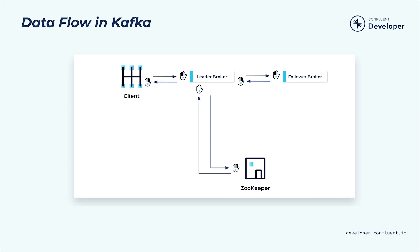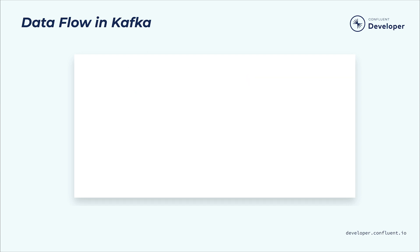Internally, Kafka represents a client's identity using an object called a Kafka principal. If you connect to Kafka and authenticate using a username and password, for example, the Kafka principal associated with the connection will represent your username. It tells Kafka you are who you say you are.